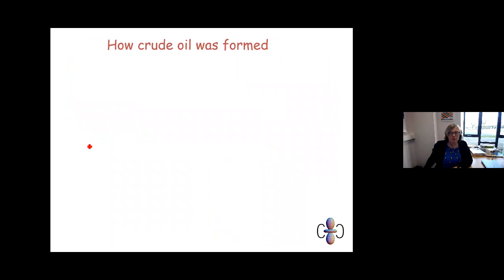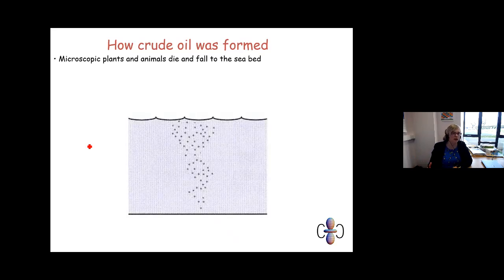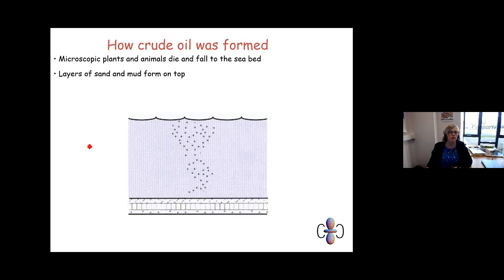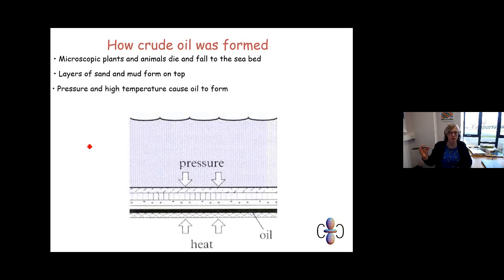Going back to basics built upon from your key stage three understanding: how crude oil was formed. It was created from microscopic plants and animals that died a very long time ago — hence the word fossil — because it's one of the three fossil fuels created millions of years ago: crude oil, natural gas, and coal. It built up over time in layers of sand and mud sediment, compressing down, causing great pressure and temperature, forming this extremely useful raw material.